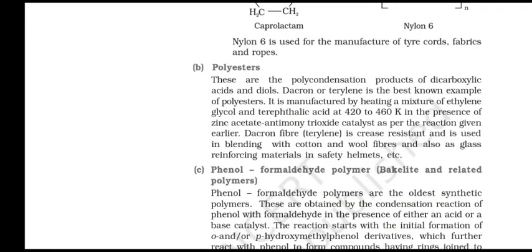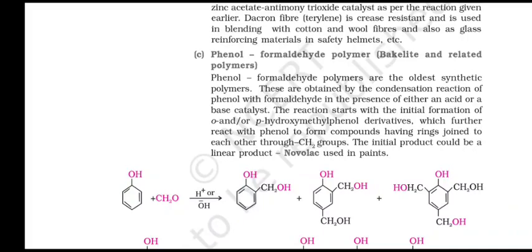Polyesters: these are polycondensation products of dicarboxylic acids and diols. Dacron or Terylene is the best known example of polyesters. It is manufactured by heating a mixture of ethylene glycol and terephthalic acid at 420 to 460 K in the presence of zinc acetate and antimony trioxide catalyst. Dacron fiber (Terylene) is crease resistant and is used in blending with cotton and wool fibers and also as glass reinforcing material in safety helmets.